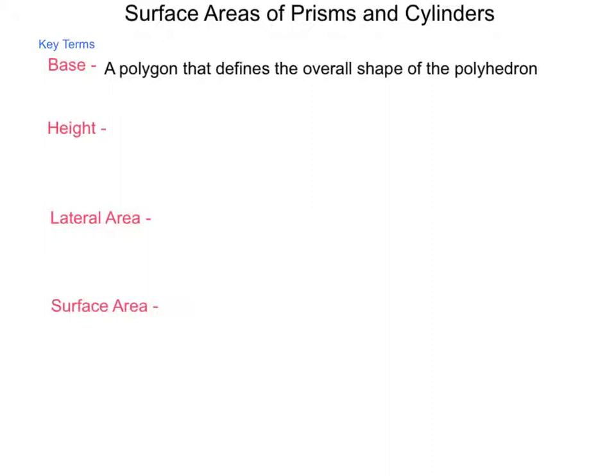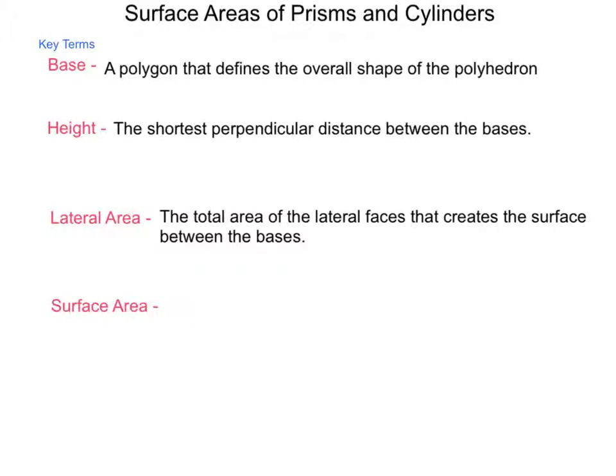All these surfaces working together create the overall shape. When we talk about the height of a prism or a cylinder, this is just the shortest perpendicular distance between the bases. As we start looking at surface areas, there are a couple different types. First is lateral area, which is the total area of the lateral faces that creates the surface between the bases. And then surface area, which is the sum of the lateral area and the two bases.